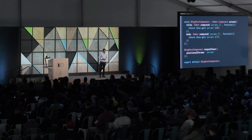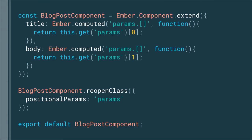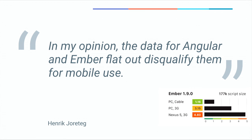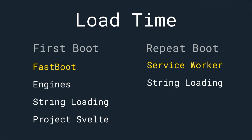And finally, we have Ember.js — a framework for building ambitious web applications. It utilizes components, and routing in Ember is a core tenant. The Ember router, similar to the React router, works just fine on both the client and the server. Interestingly, frameworks have a bad rap when it comes to performance. Henrik Jortzig recently said that in his opinion the data for Angular 1 and Ember flat out disqualified them for mobile use — mainly down to bundle size. Ember as a framework still has a relatively large bundle size. The Ember team acknowledged this and has been looking at how they could improve the situation with mobile in mind.